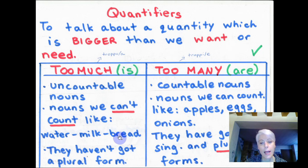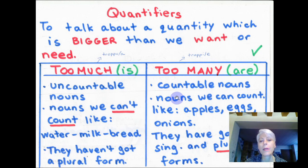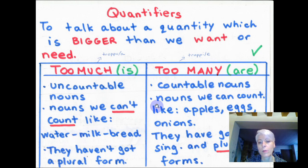They do not have the plural form, so they will never have an S at the end. But if we divide water, milk into glasses or bottles, and we divide bread into slices or pieces, they become countable. So uncountable nouns become countable when they are divided into parts.